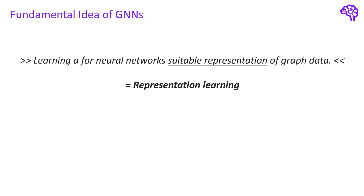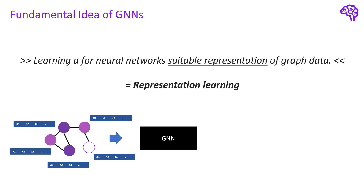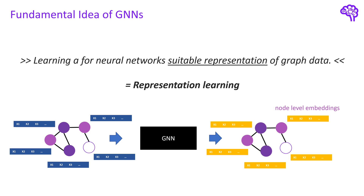The fundamental idea of GNNs is to learn a neural-network-suitable representation of graph data — this is also called representation learning. Using all the information about the graph, including node features and connections stored in an adjacency matrix, the GNN outputs new representations called embeddings for each node. These node embeddings contain the structural as well as the feature information of the other nodes in the graph, meaning each node knows something about the other nodes, its connections to them, and its context in the graph. The embeddings can then be used to perform predictions, depending on the machine learning problem you want to solve. For node-level predictions you would simply use the node embedding of a specific unlabeled node to obtain a prediction.